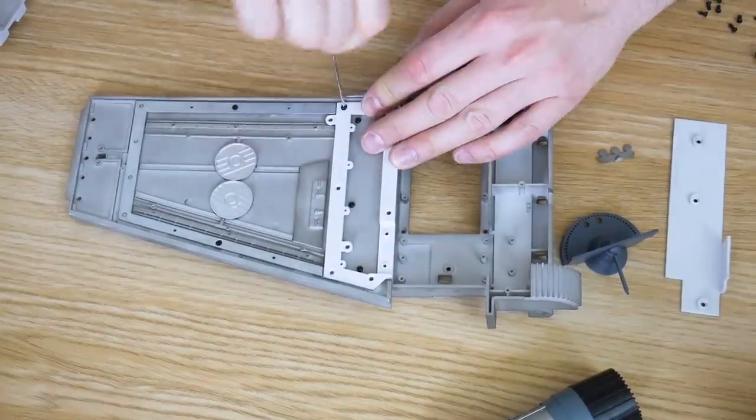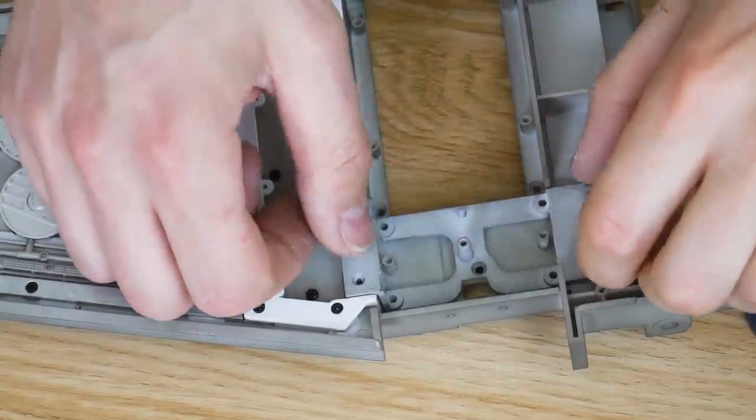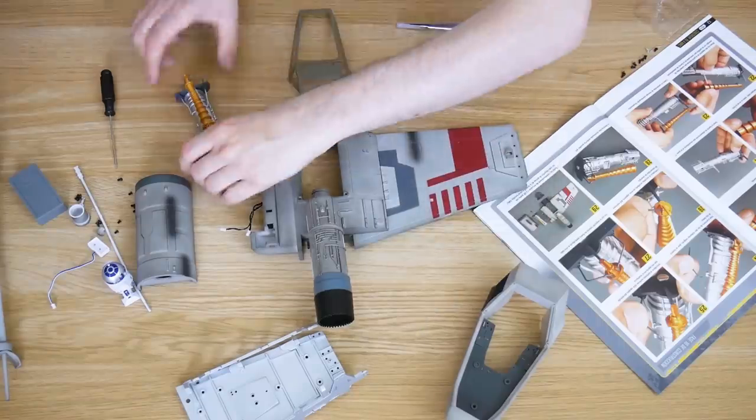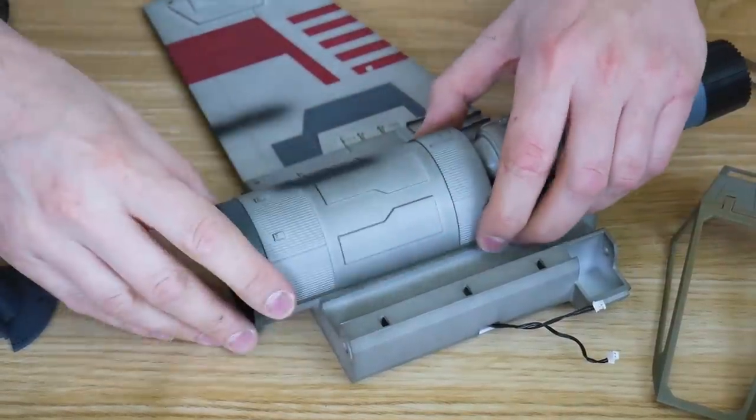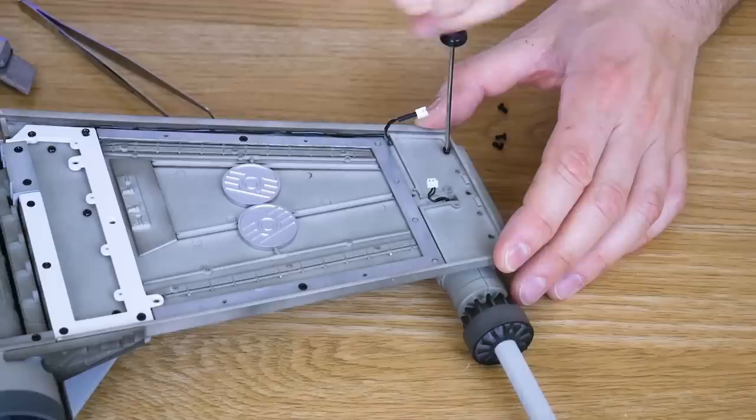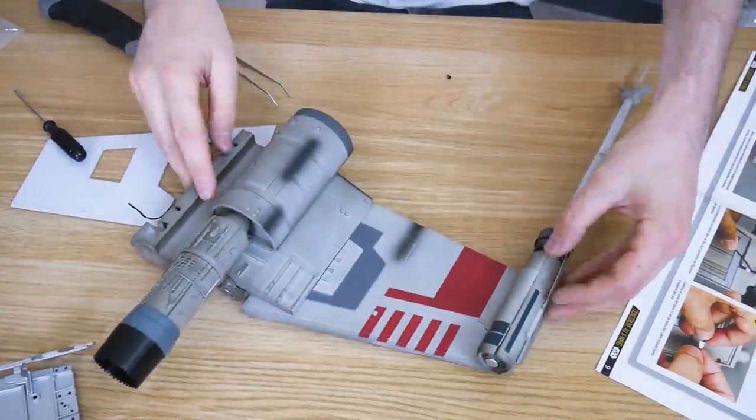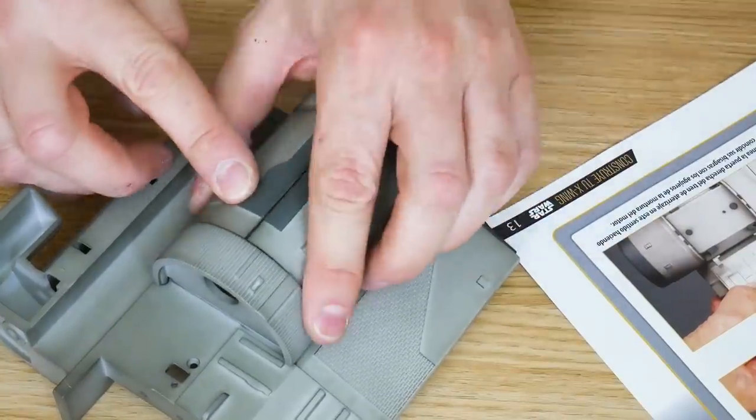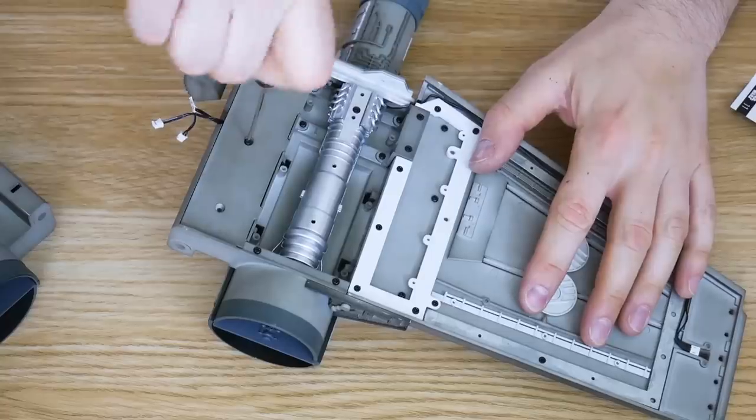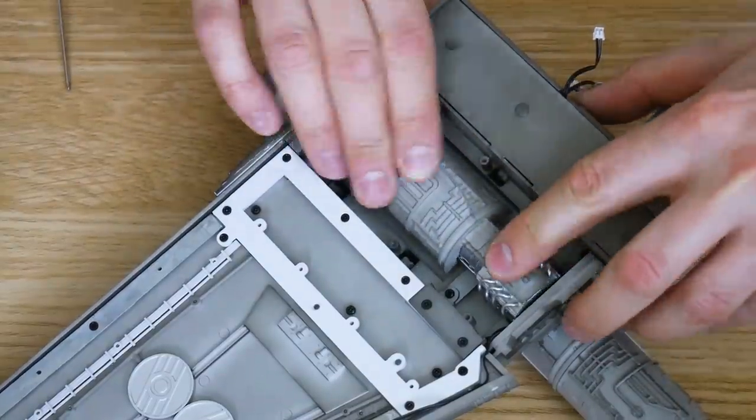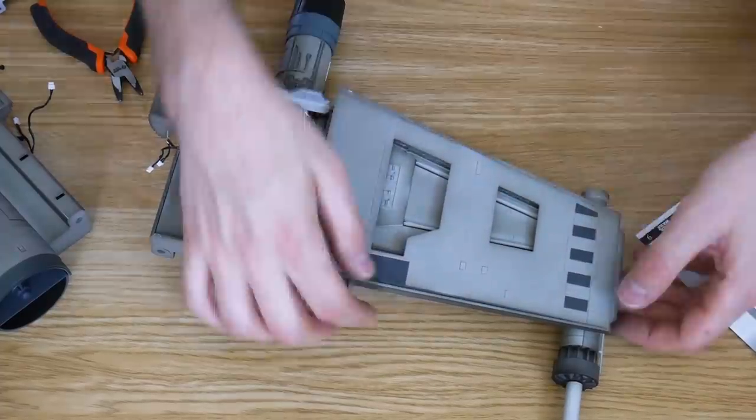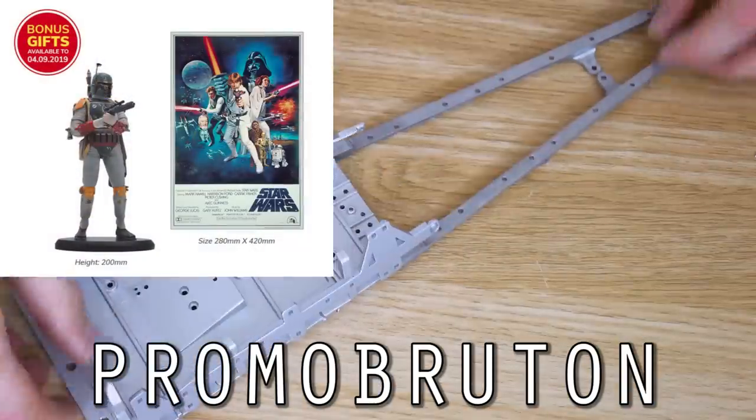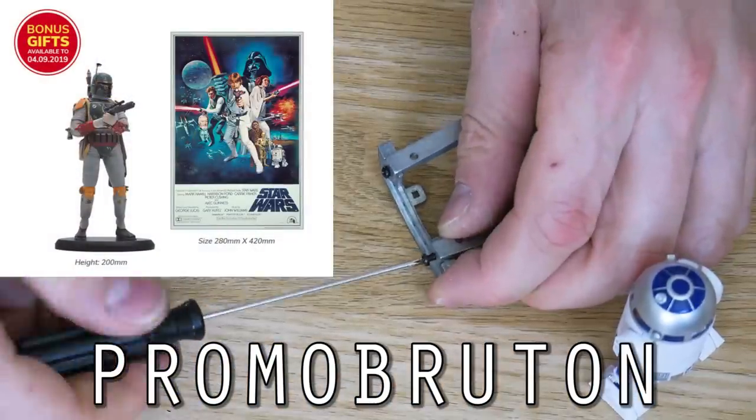All elements are accurately reproduced from blueprints provided by Lucasfilm Limited. From the remote activated working lights, motorized S-foils, removable hyperdrive, opening cockpit to a highly detailed R2-D2 miniature, all details are captured in metal and high quality ABS plastic. This is a fabulous model for any Star Wars fan, and comes with an assembly guide and magazine full of fascinating facts. Use promo code PROMOBRUTEN to get a Star Wars poster and a Boba Fett figurine if you subscribe before the 4th of September.